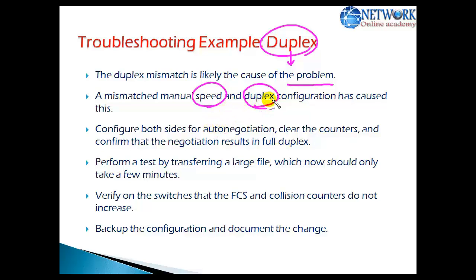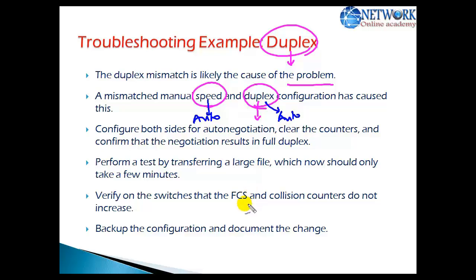By default, the speed is set to auto. When you verify the configurations on any device, the speed will be auto — that is what we call auto negotiation. Duplex is also auto by default. There are two main types of communications relevant here.